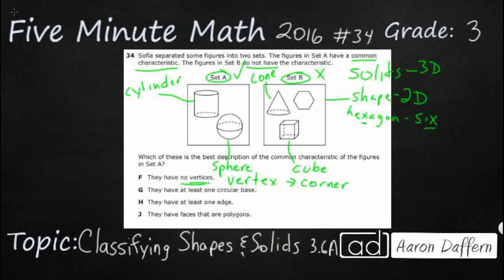So there are no corners in my cylinder. There are no corners on my sphere because you don't have any edges. So vertices are going to need an edge. So it looks like that might work for set A.